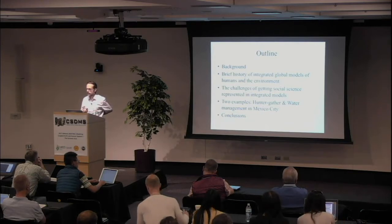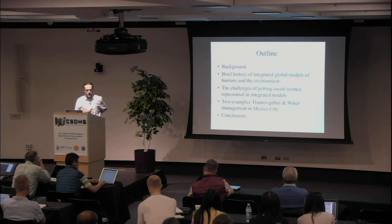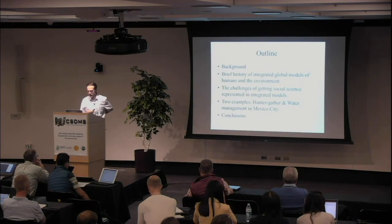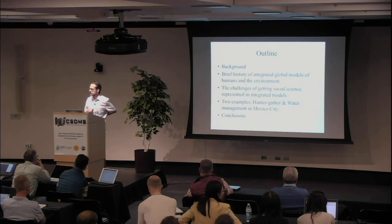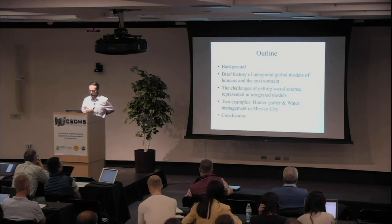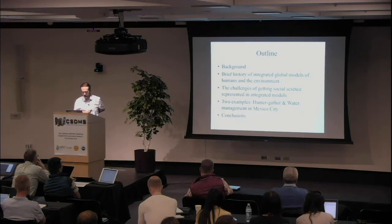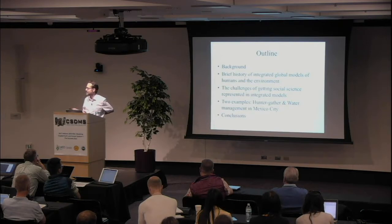I'll give a brief history about integrated models of humans and the environment, then a discussion of some challenges in getting social science represented in integrated models. I provide two examples in which I worked with social scientists — modeling hunters and about water demands in Mexico City. I conclude, and I hope to have some discussion, since so far there has been only talk.